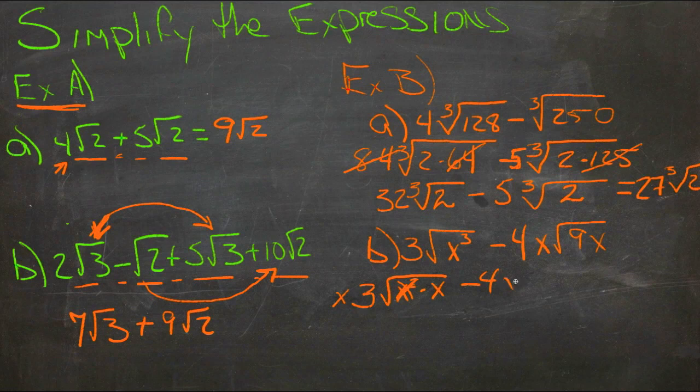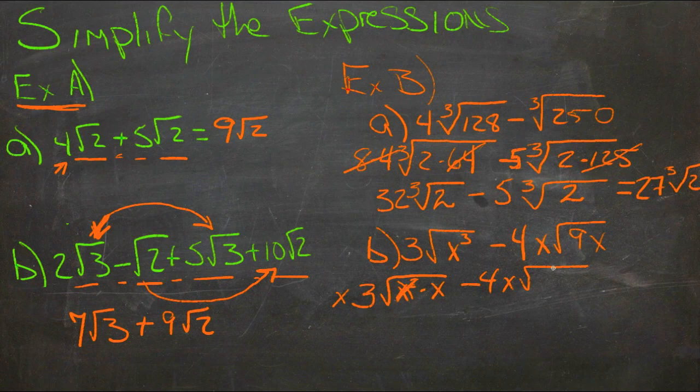Minus 4x square roots of... now again, x doesn't have an even root, but 9 does, so we'll take our 9 out, we'll put the 3 outside.